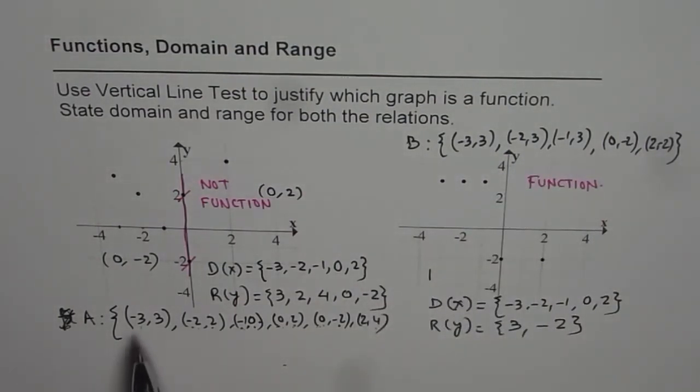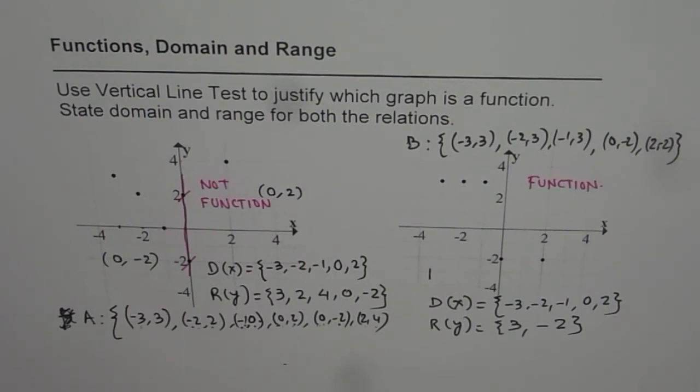This is relation A. All the x elements are part of domain, and all the y elements are part of range. If values are repeated, we don't write them twice. We write them just once. So that is how we write domain and range when a scatter plot is given to us. And we have seen how vertical line test justifies whether the given relation is a function or not.